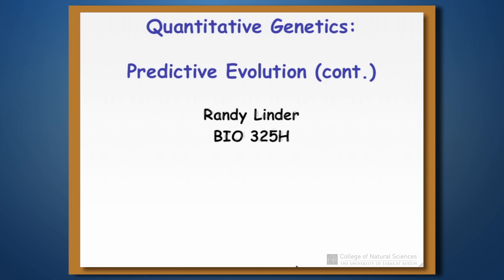This is the last in a series of three short talks on quantitative genetics. We're continuing with our discussion of how we can use quantitative genetics to understand something about evolution of quantitative traits.